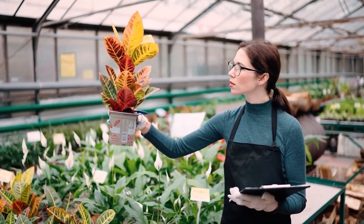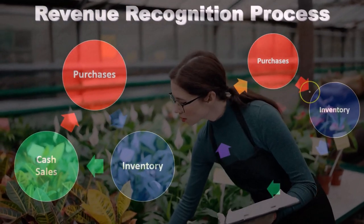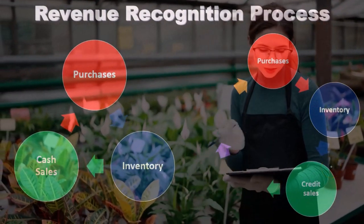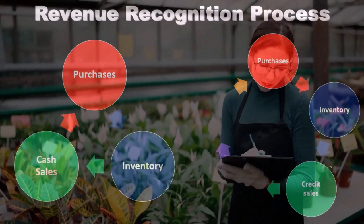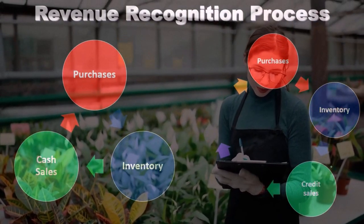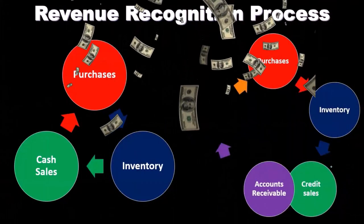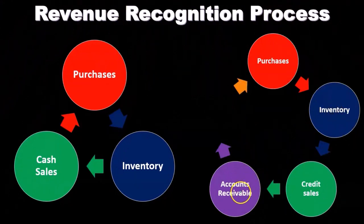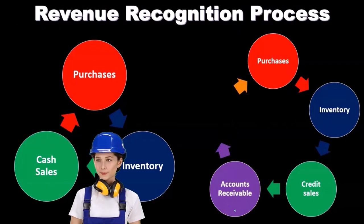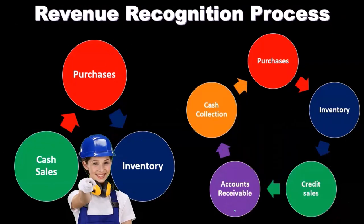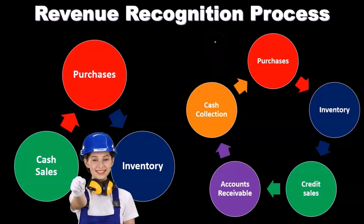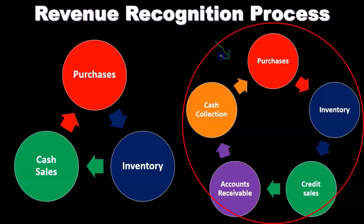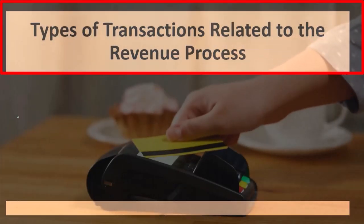What if sales are made on account? We'd have purchases, track the inventory, then have credit sales. In a credit sale, we didn't get cash at the point of the sale — we expect cash in the future. That means recording accounts receivable, then eventually collecting cash on those receivables. This is the more complex cycle. For cash sales, the cycle is more simplified.